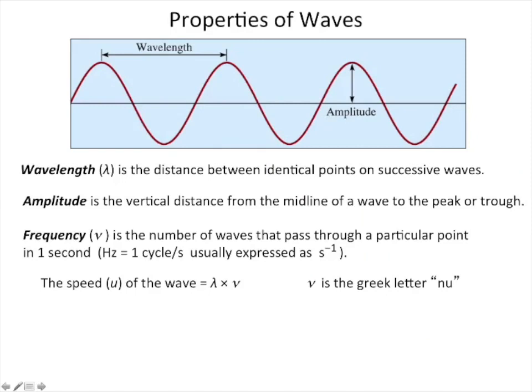Okay, the simple starting point here is the property of a wave. This slide has a wave drawn on it. The wavelength is the distance between identical points on successive waves. For example, from the top of one wave to the top of the next wave, or from the center crossing heading down to the next center crossing heading down. That's the wavelength. The amplitude is from the center line of the wave to the highest peak up here.